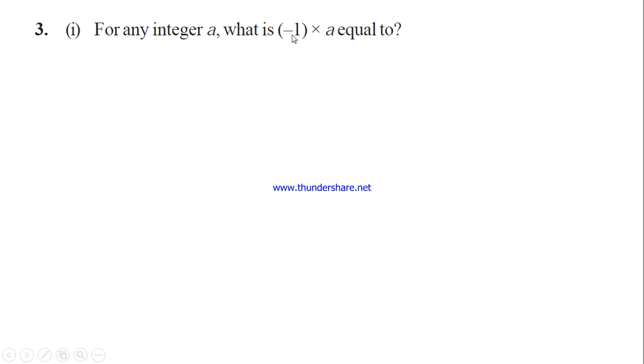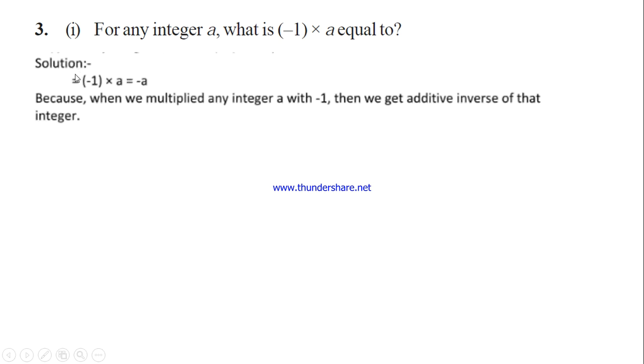Just we have to multiply these values. First let's multiply the sign: minus into plus is minus. Minus 1 into a is a, not 1a, just a. Minus into plus is minus, 1 into a is a, so minus a. They are asking us to multiply the value. The answer is minus a.